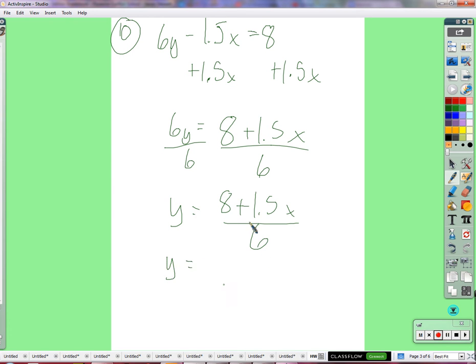Y equals 8 plus 1.5x over 6. That's great. We can also take 8 divided by 6 and get 4 thirds. Simplifying 8 divided by 6 plus 3 halves divided by 6. 1.5 is 3 halves, and we divide by 6, we're going to multiply instead by the reciprocal of 6 which is 1 sixth, and 3 to 6 can cancel.